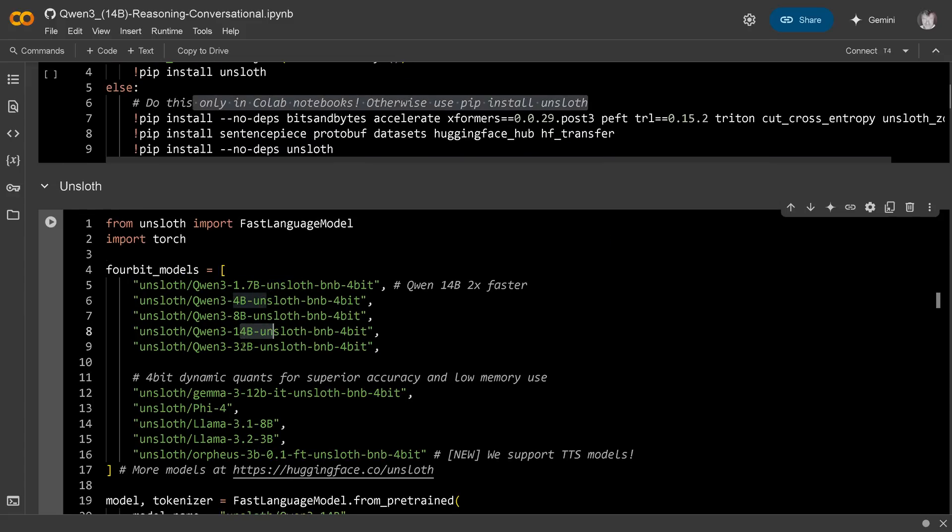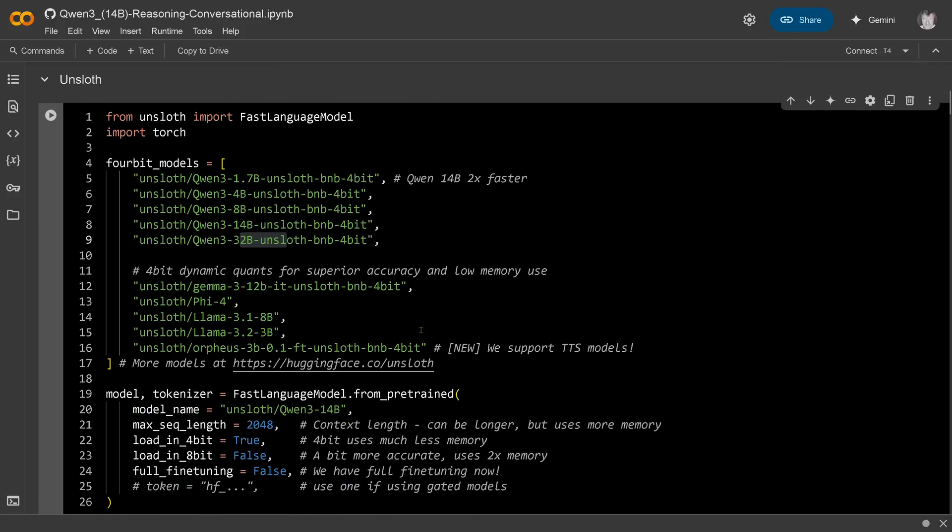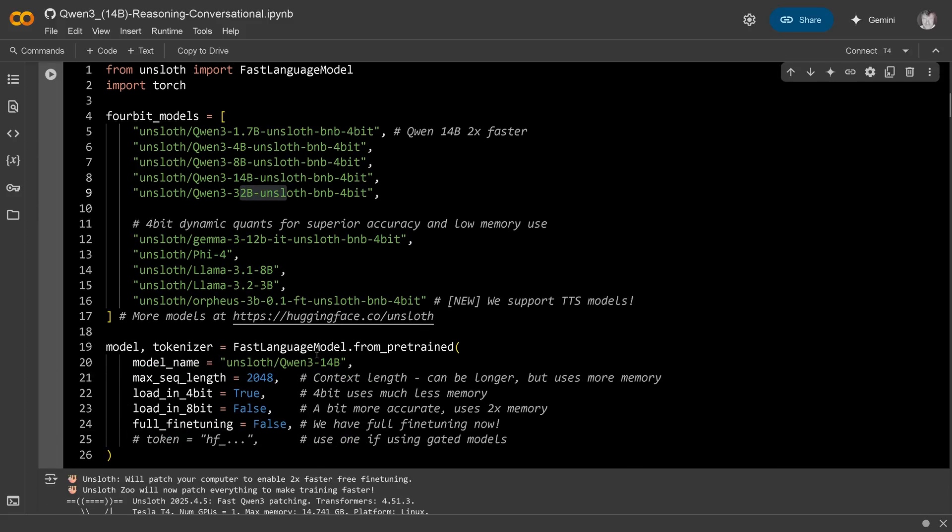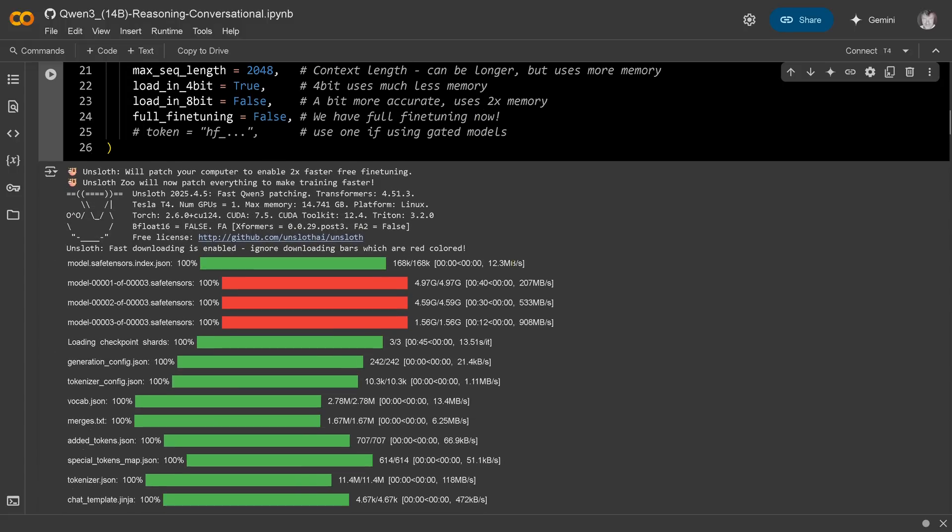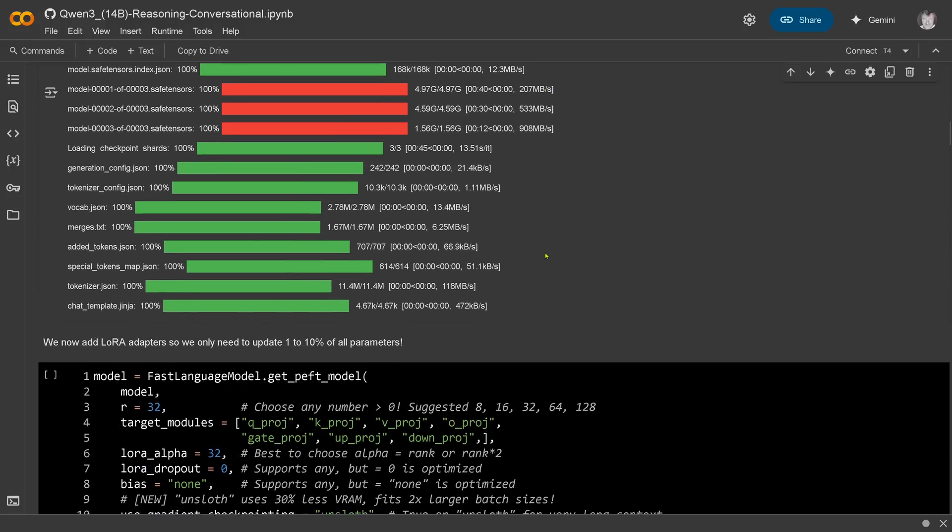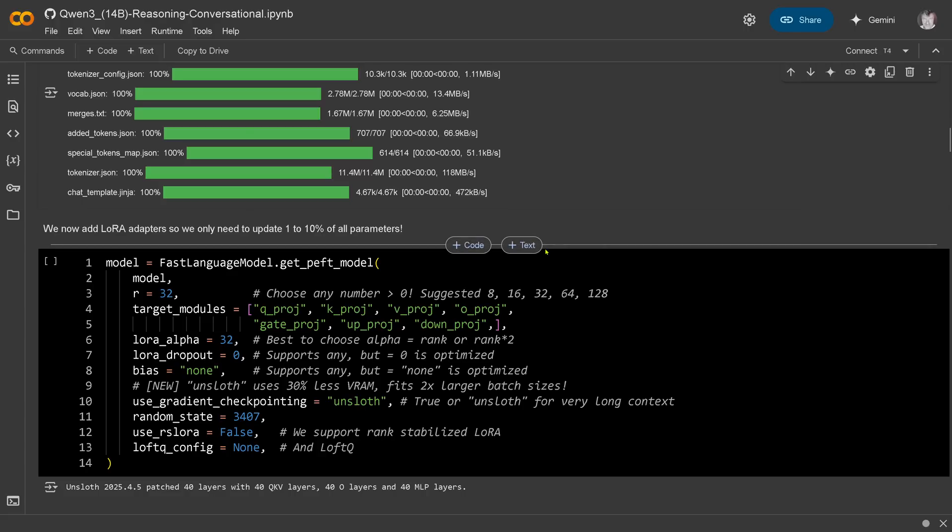You have here all the information that you need. You see exactly the VRAM requirement that you are looking for. And they provide you here with a notebook. Let's have a look at the notebook. So, here you see, Unslot provides us here a beautiful Colab notebook. Everything you need for the fine-tuning of Q1.3.